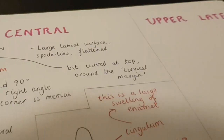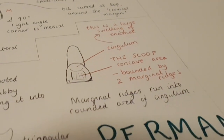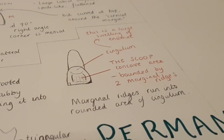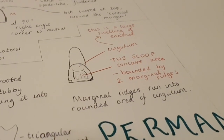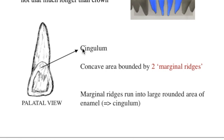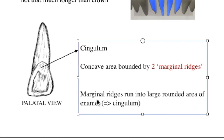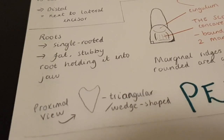On the lingual side we have a large swelling which is the cingulum, followed by a small concave area which is the scoop — not necessarily technical terminology, just what our lecturer referred to it as — which is bounded by two marginal ridges. The marginal ridges run into the rounded area of enamel which is the cingulum. And just quickly, the proximal view is triangular or wedge-shaped. That's the upper central incisor done.